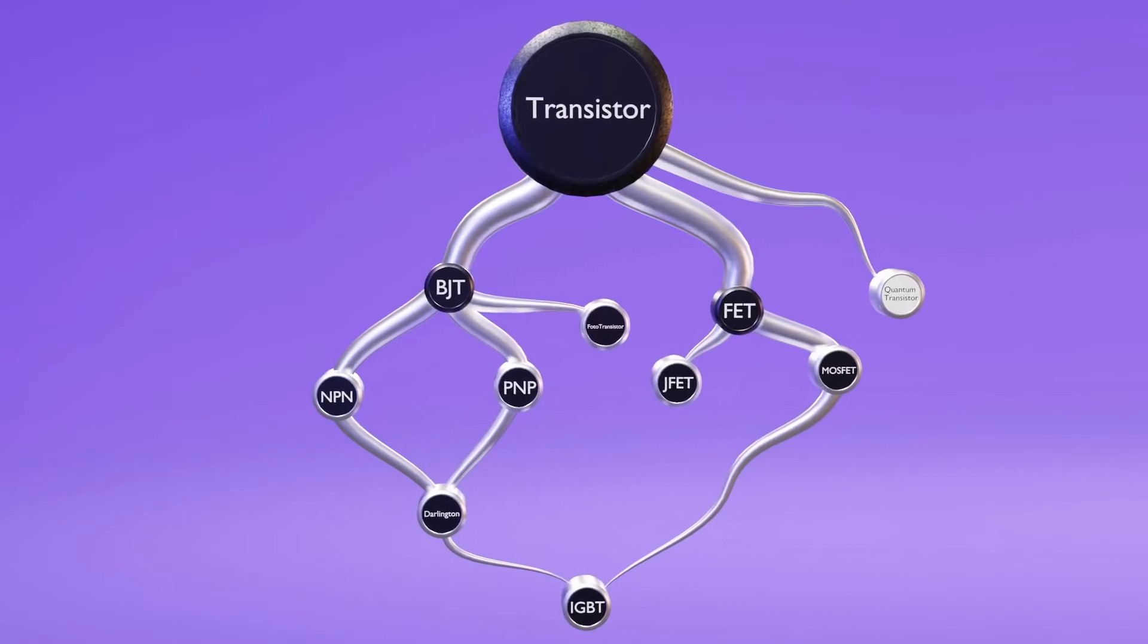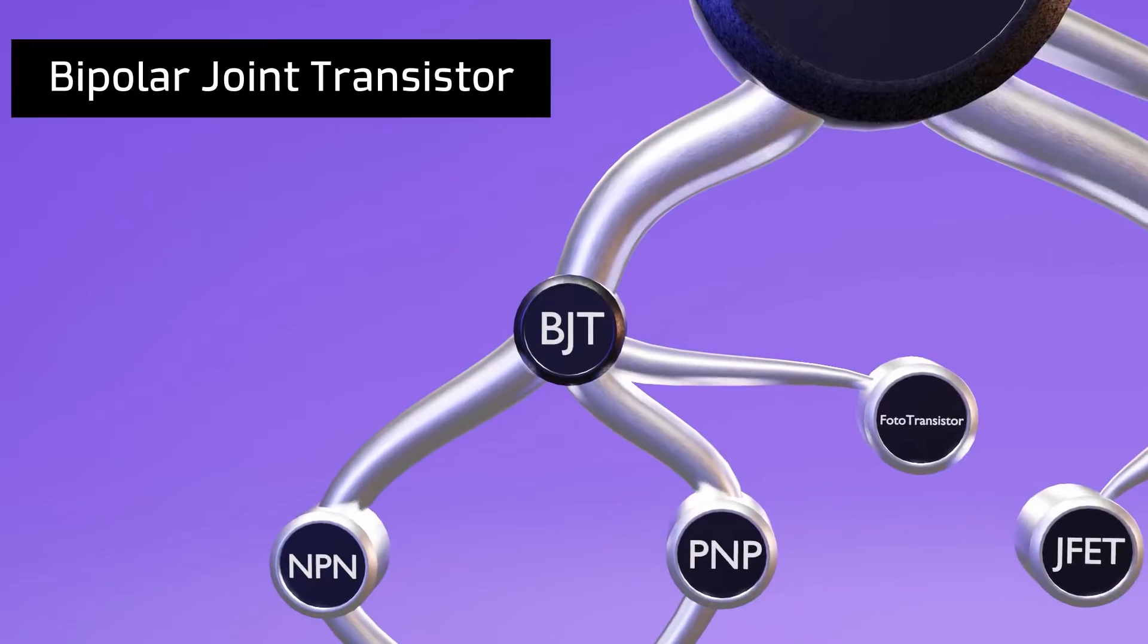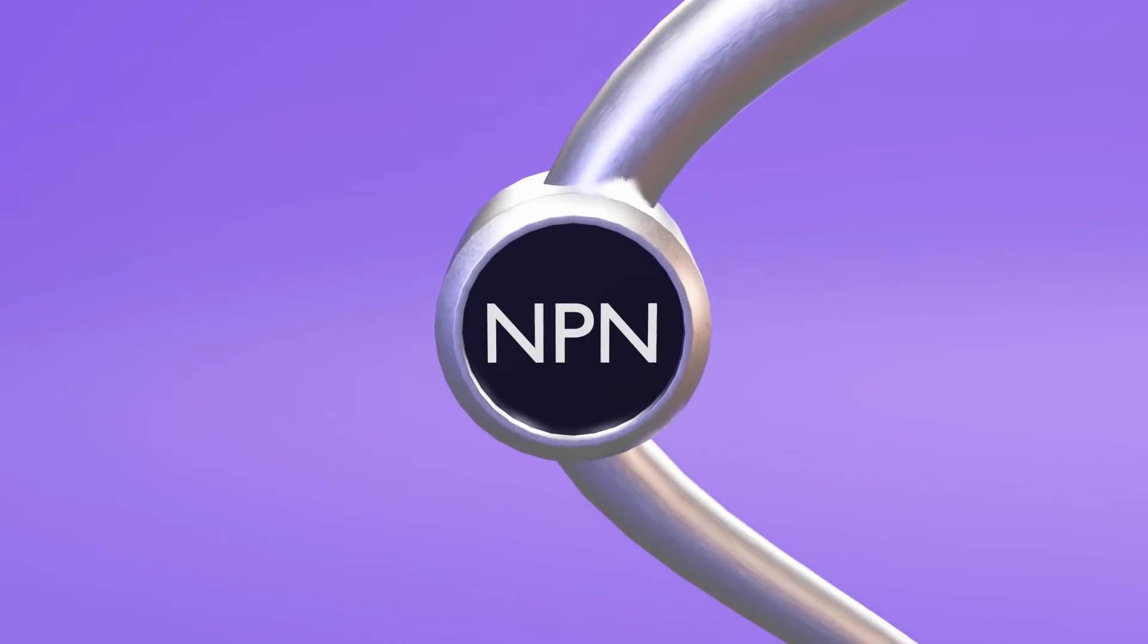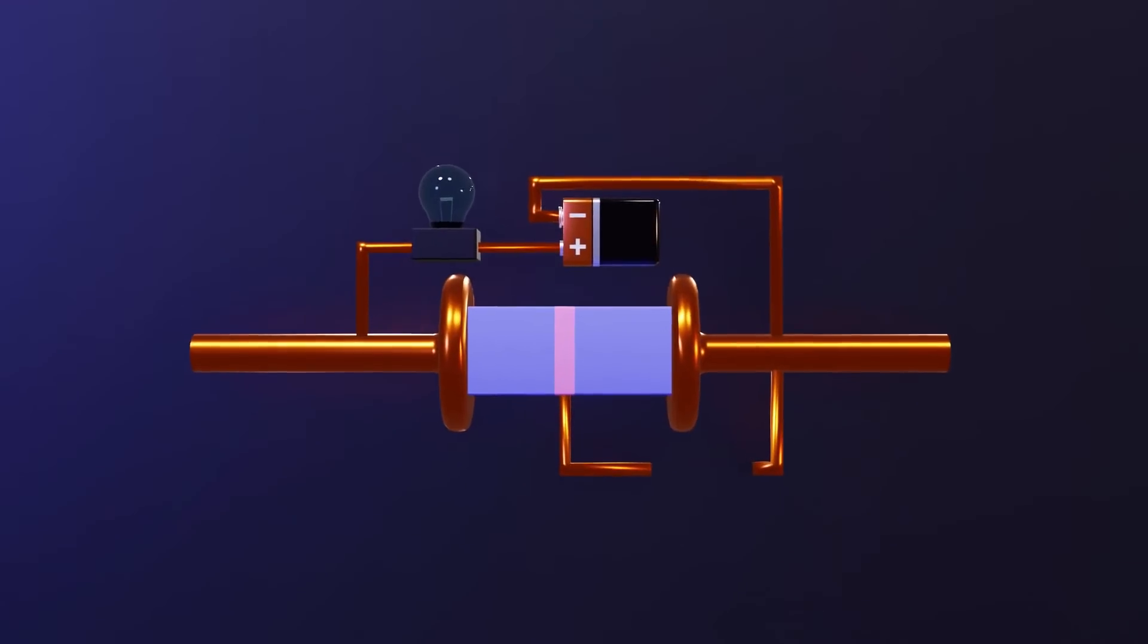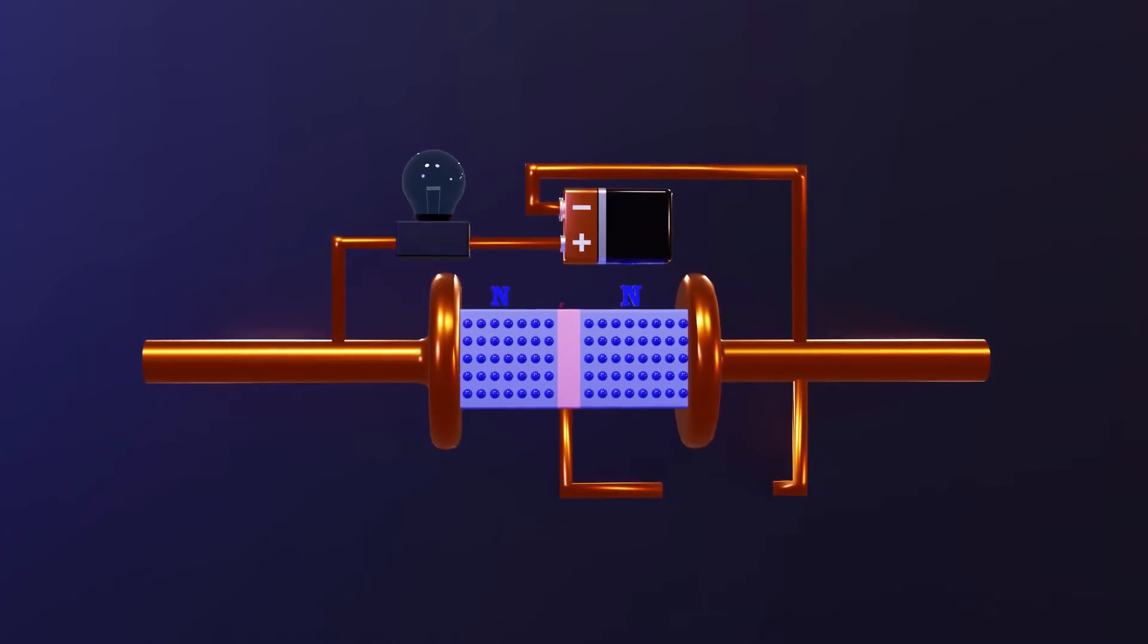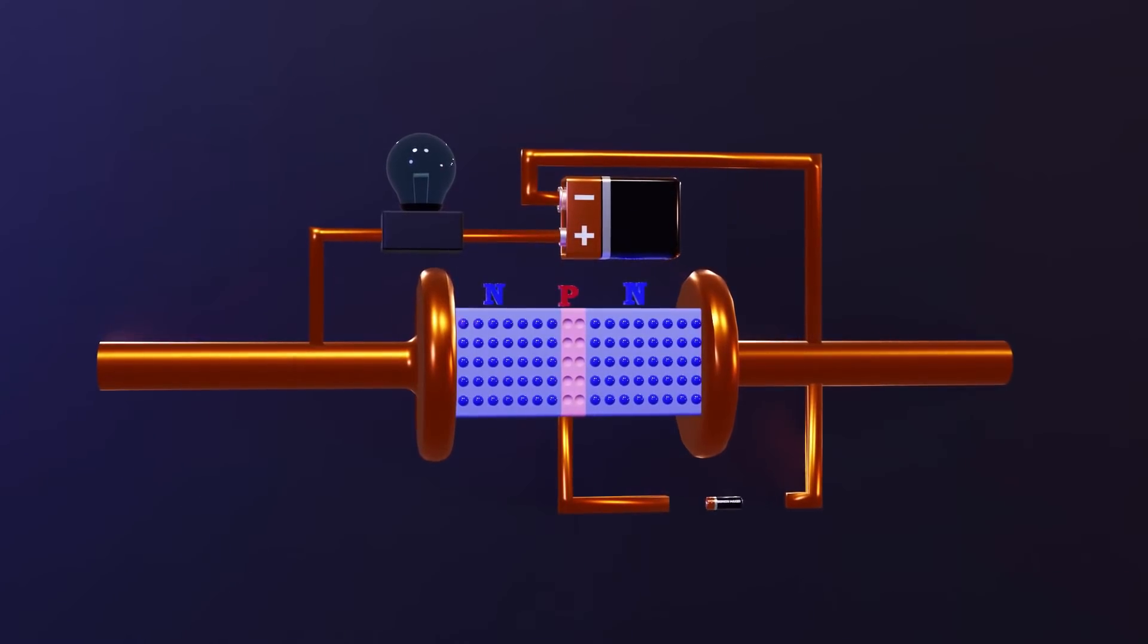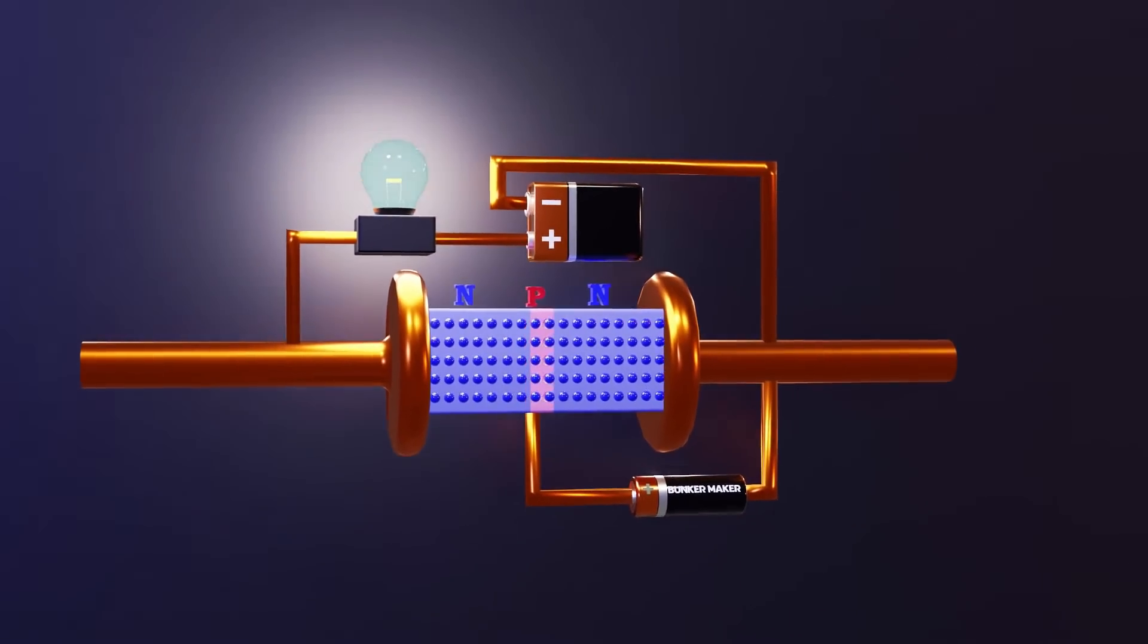The first family of transistors we will talk about are the bipolar junction transistors, or BJT, and the first type of transistor of this family are the NPN transistors. As we saw in the previous chapter, they are composed of three interconnected semiconductors with different doping. Type N semiconductors have more free electrons, while P-type semiconductors have holes, or lack of electrons. Both electrons and holes, we will call them charge carriers, since they can move through the semiconductor allowing current flow.